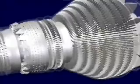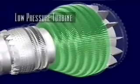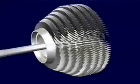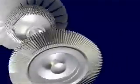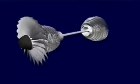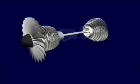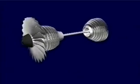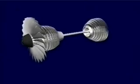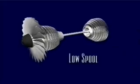Next, the air passes through the larger low-pressure turbine. This turbine has two purposes. First, it extracts enough energy from the air to power the low-pressure compressor at the front of the engine core. These two components are connected via a second shaft, which actually passes through the center of the high-spool. However, the second and more important job of the low-pressure turbine is to turn the large titanium fan blades up front. The fan is connected to the same shaft as the low-pressure compressor and low-pressure turbine. Together, these three components make up the low-spool.